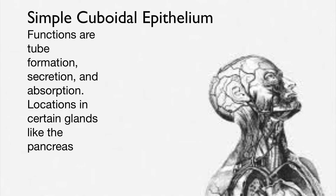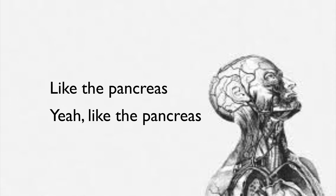Simple cuboidal epithelium — functions are secretion and absorption. Locations include certain glands, like the pancreas.